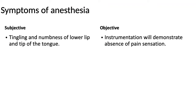Signs of effectiveness of the nerve block include subjective and objective signs and symptoms. Subjective symptoms include tingling and numbness of the lower lip, followed by the tip of the tongue. The objective sign is the absence of pain when instrumentation is performed on that particular patient.